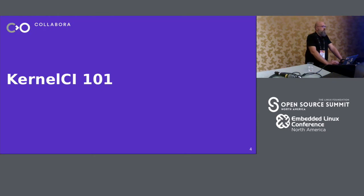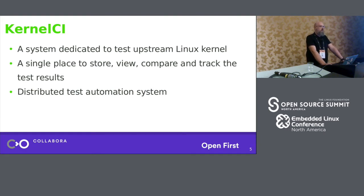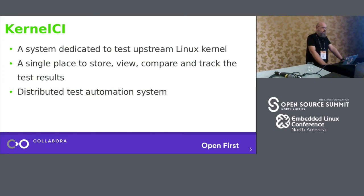Kernel CI is basically an application, a system that's supposed to test the upstream Linux kernel. It's meant to build the kernel, build the branch that you've selected, upload the artifacts, then use the artifacts to run your tests and get the test results back. It's meant to be a single place where you can see stored test results, boot test results, view them, compare them, and track.